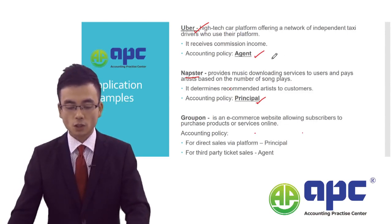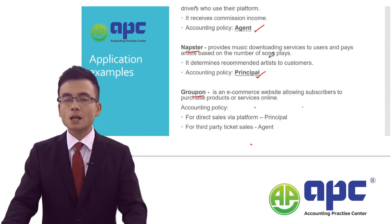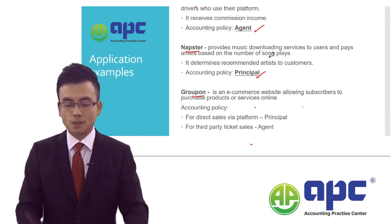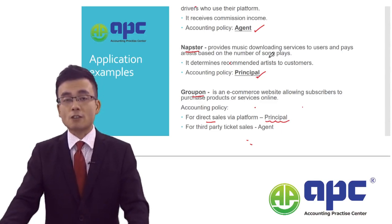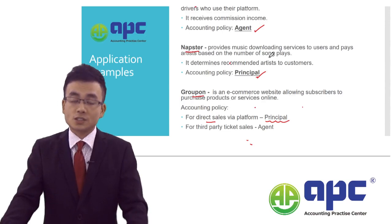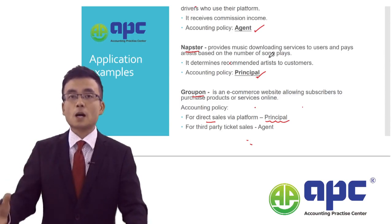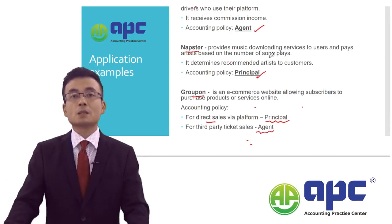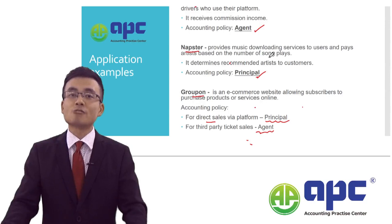The third company is Groupon, an e-commerce company to buy products or services online. In this case, their accounting policy is divided into two methods. For direct sales, Groupon is deemed the principal and recognises gross revenue, because the direct sales are products they made. For other services — for example, selling airline tickets on behalf of airline companies — they only receive commission income. So for that second revenue stream, they deem themselves as agent and recognise revenue on a net basis, recognising only the commission income.